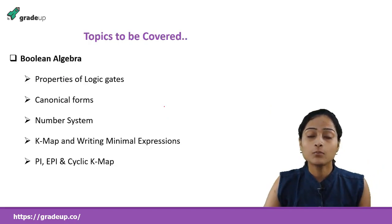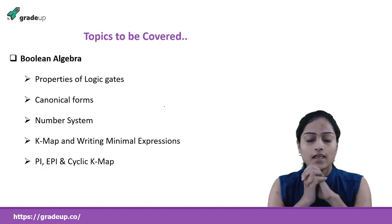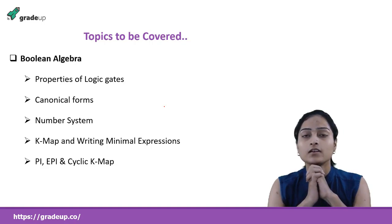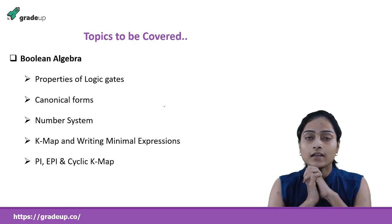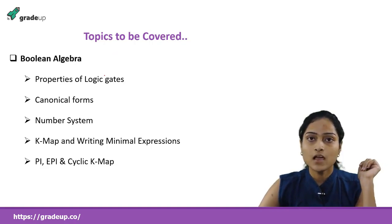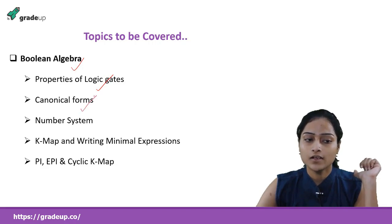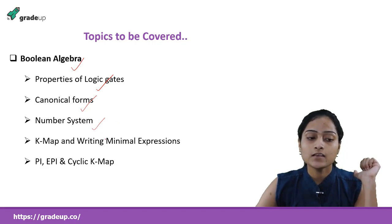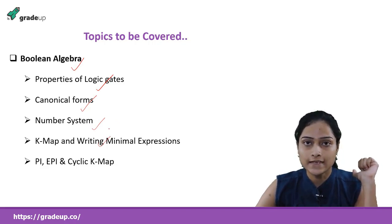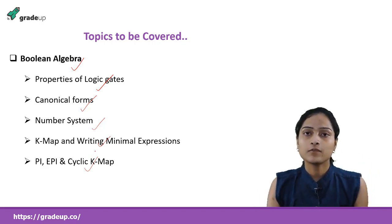We have studied three basic gates — AND, OR, NOT — and derived four other logic gates. The DLD syllabus is divided into three parts: Boolean algebra, combinational circuits, and sequential circuits. In Boolean algebra, we have covered logic gates here. In the next video, we will discuss properties of logic gates, canonical forms for writing expressions, number systems, K-maps and minimal expressions, and the prime implicant cyclic K-map.